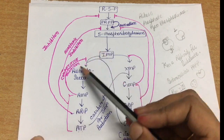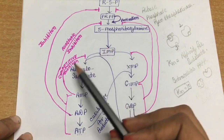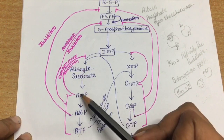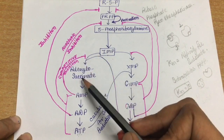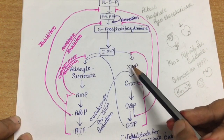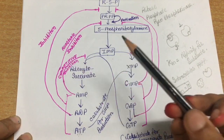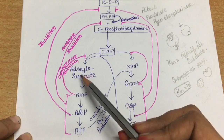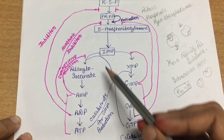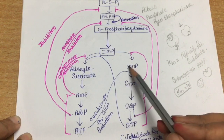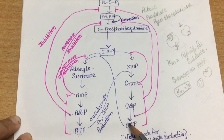After this, 5-phosphoribosylamine gets converted into IMP, and here the branched pathway starts. In the branched pathway, there is another level of inhibition. In the adenine branch, AMP is a competitive inhibitor with IMP for the production of adenylosuccinate. In the guanine branch, GMP is a competitive inhibitor with IMP for the production of XMP. Additionally, for the synthesis of adenylosuccinate, GTP acts as a co-substrate with IMP, and ATP acts as a co-substrate with XMP for the production of GMP.